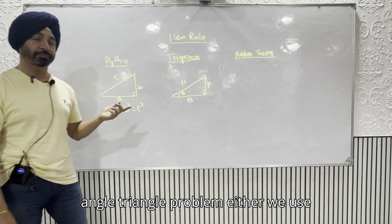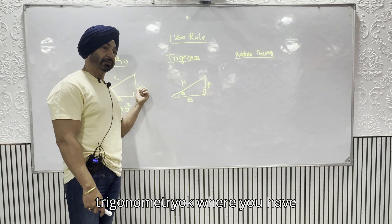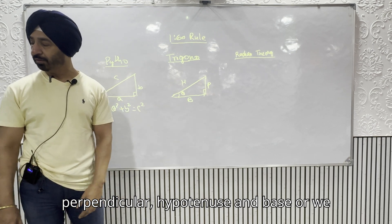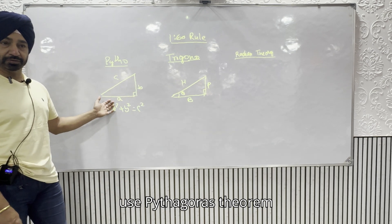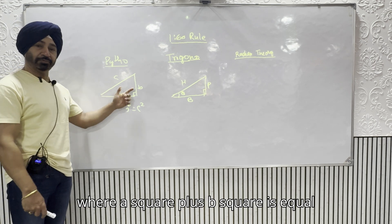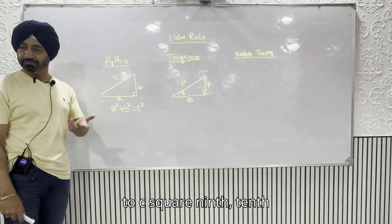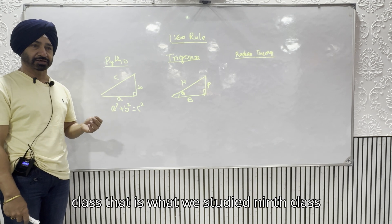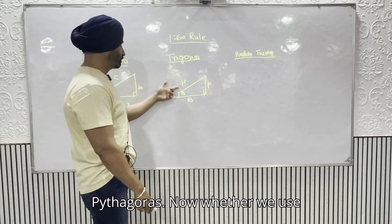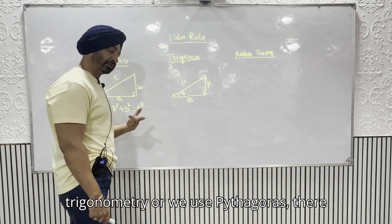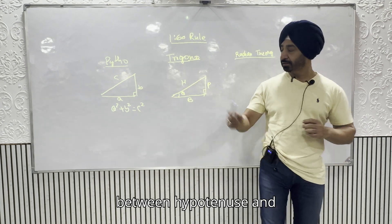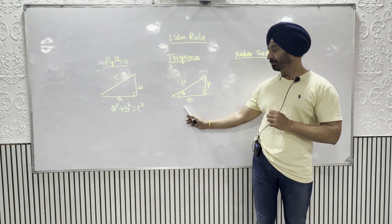To solve a right angle triangle problem, either we use trigonometry — where you have perpendicular, hypotenuse and base — or we use the Pythagoras theorem, where a² + b² = c², which we studied in 9th class. Whether we use trigonometry or Pythagoras, there is always a difference between hypotenuse and base.